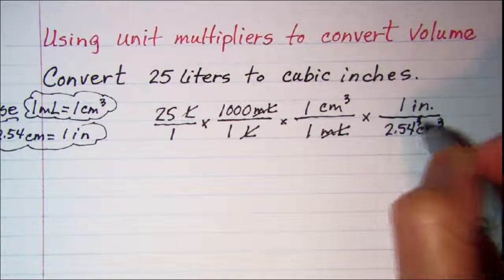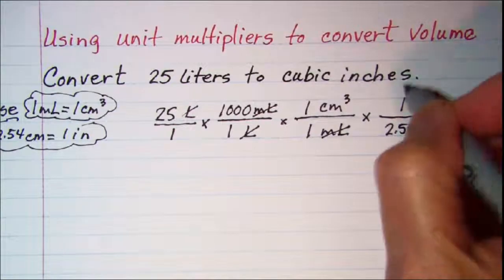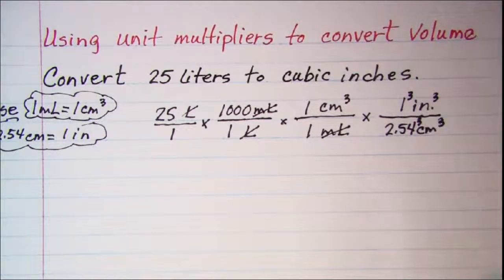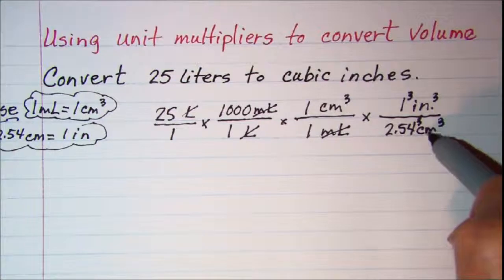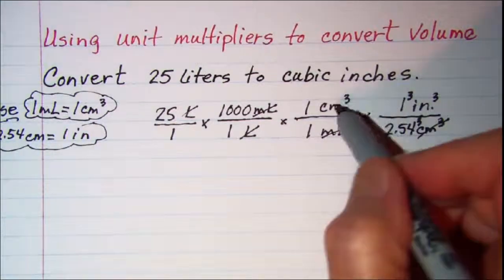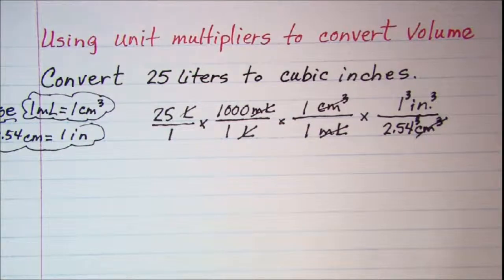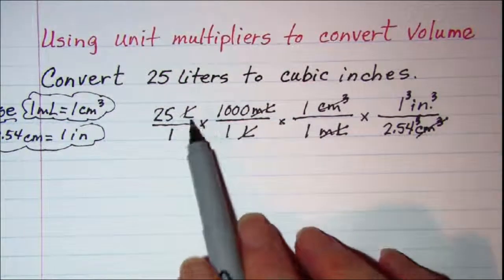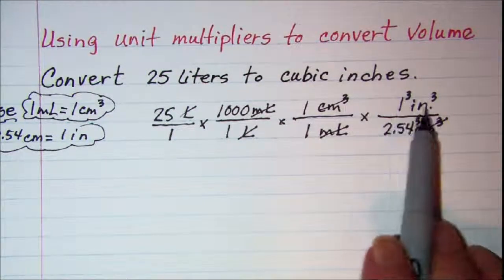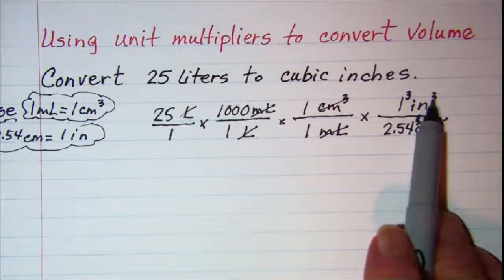So I will be cubing cubic centimeters, 2.54 cubed, inches cubed, and 1 cubed. Now that I have cubic centimeters in the denominator and cubic centimeters in the numerator I can cancel those off. And I have changed now to cubic inches in my units.